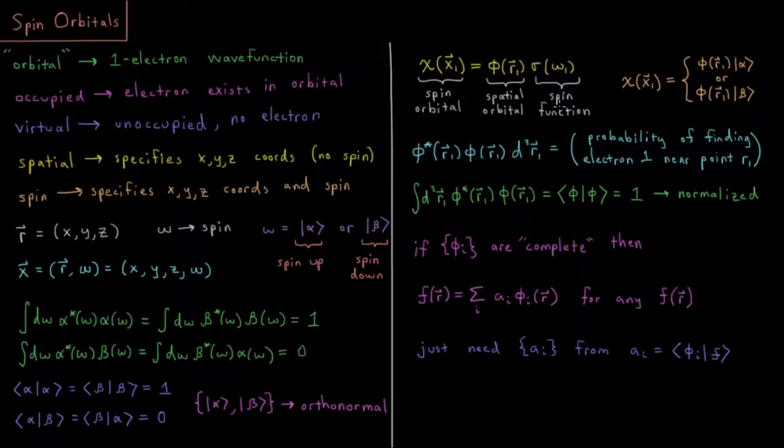times sigma, the spin function, which is a function of the spin variable omega. So this means that for a given spin orbital, we can either have it be that spatial orbital times alpha or that spatial orbital times beta, spin up or spin down.